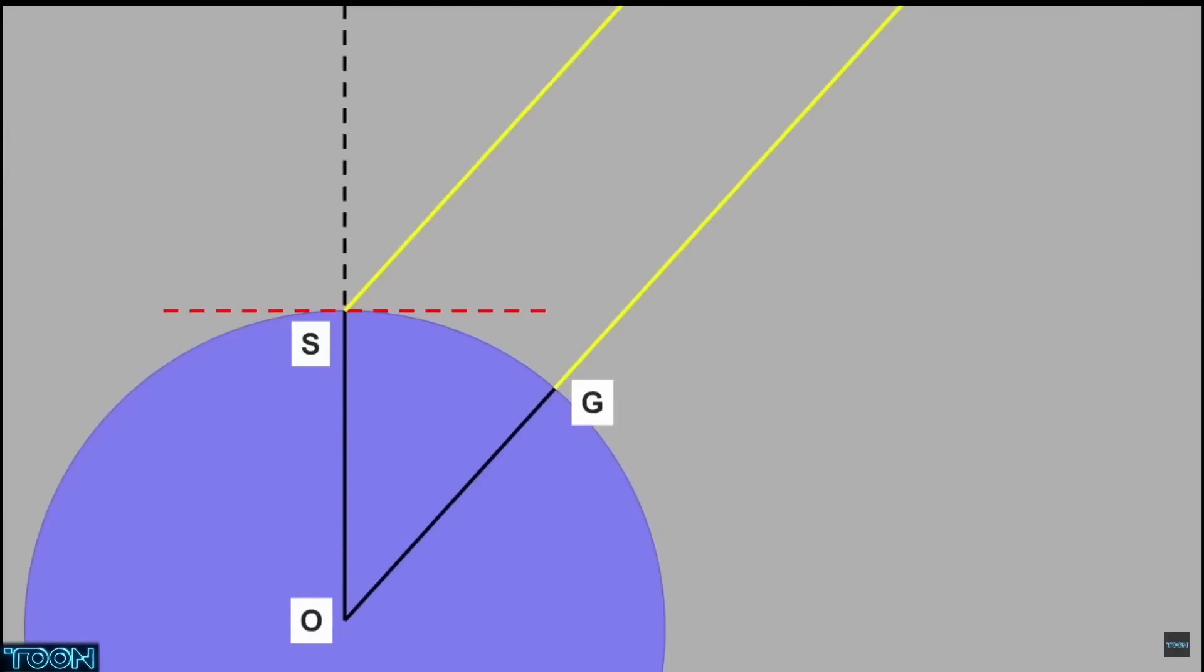Okay, so the next step is to work out how far away over the surface we are from the GP based on our elevation angle. Now I'm sure you've heard two phrases thrown around before, and they are minus from 90 and 69 miles per degree.